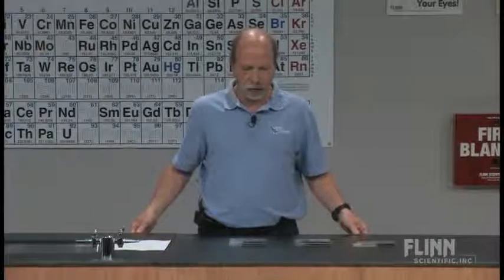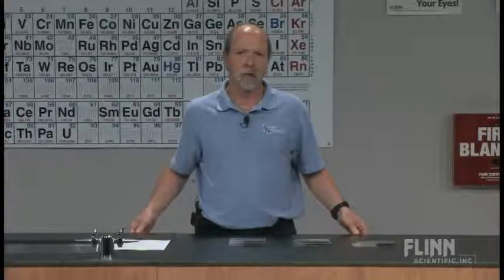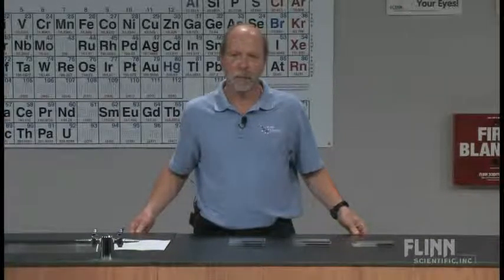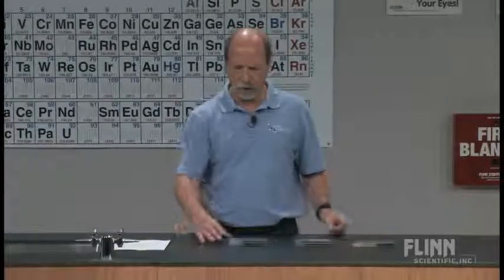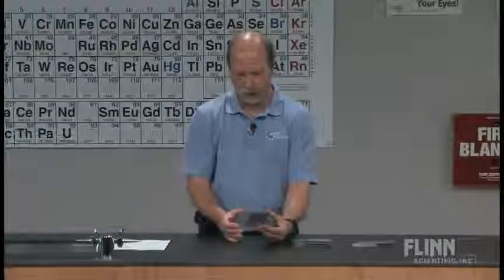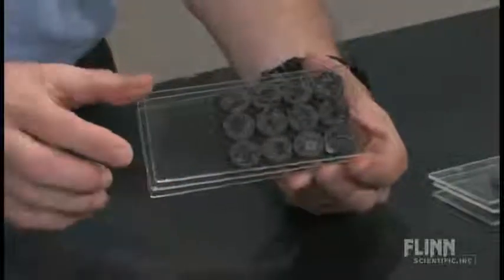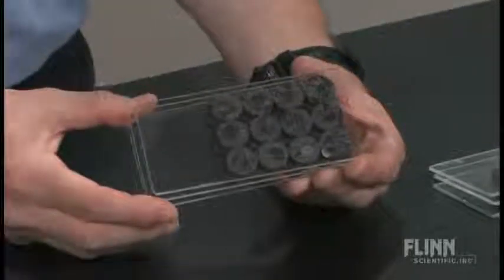What I've done is I've constructed two different types of models. One is a model of an ionic solid, and the second type is of a metallic solid. And I've done that by taking some lucite plastic and gluing some magnets to the lucite.